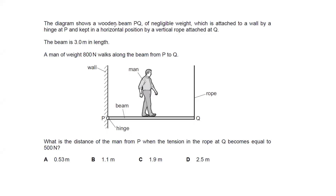The diagram shows a wooden beam of negligible weight. When they say negligible, it means you don't have to consider it — that's why we did not draw an arrow to show the weight of the beam.